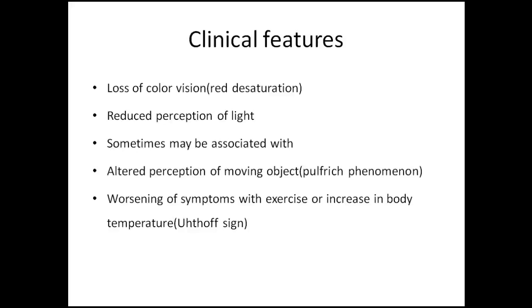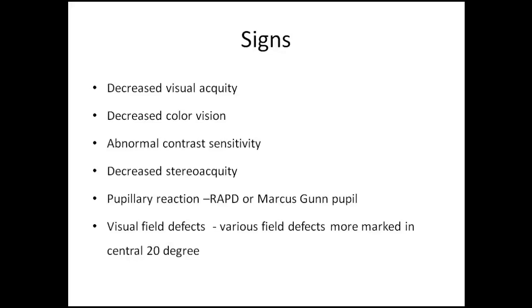The signs seen in optic neuritis include decreased visual acuity, ranging from a small decrease to perception of light only. There would be decreased color vision, abnormal contrast sensitivity, and decreased stereo acuity. One important sign to elicit in optic neuritis is the relative afferent pupillary defect (RAPD), also known as Marcus Gunn pupil. There could be visual field defects as well.